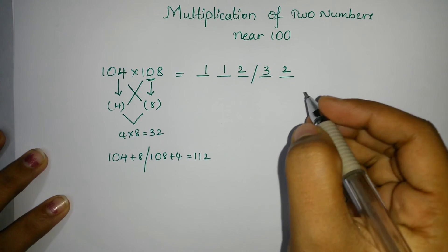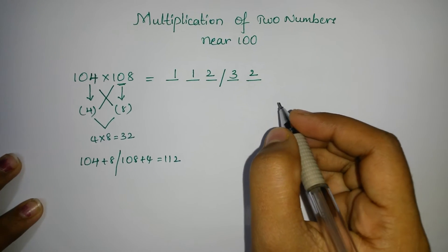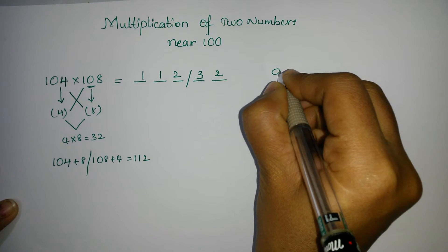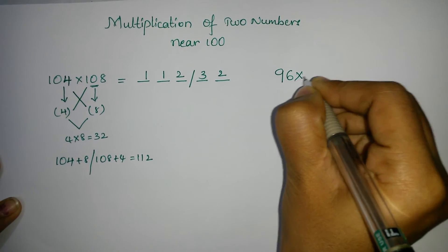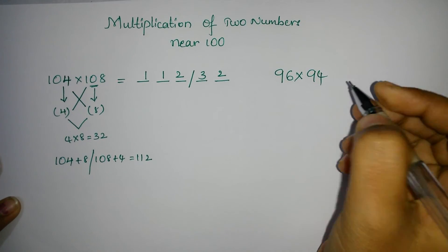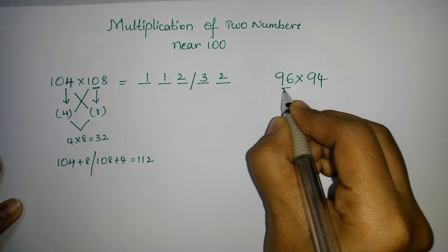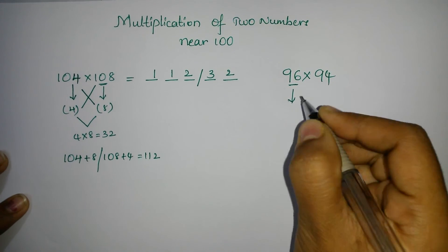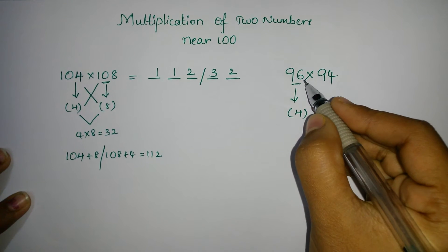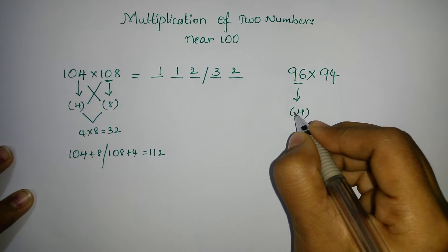In the same way, I have another example for you. So, 96 into 94. Here we have 96. That means this is less than 100. How much less than 100? 4.